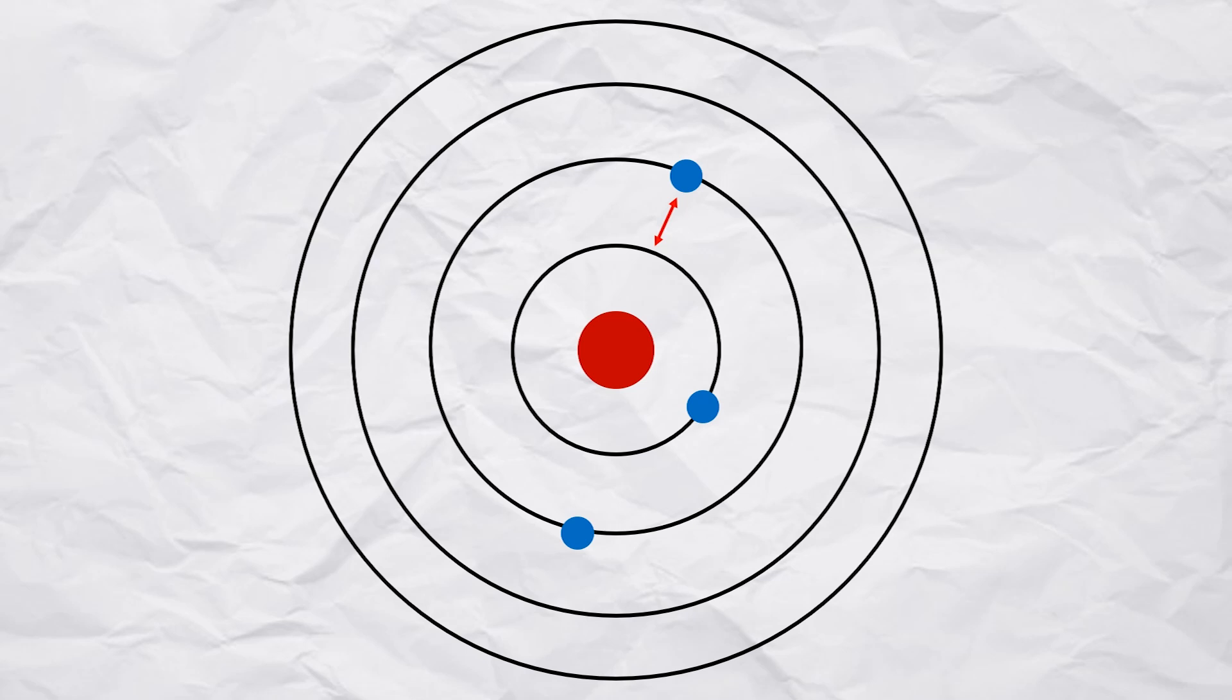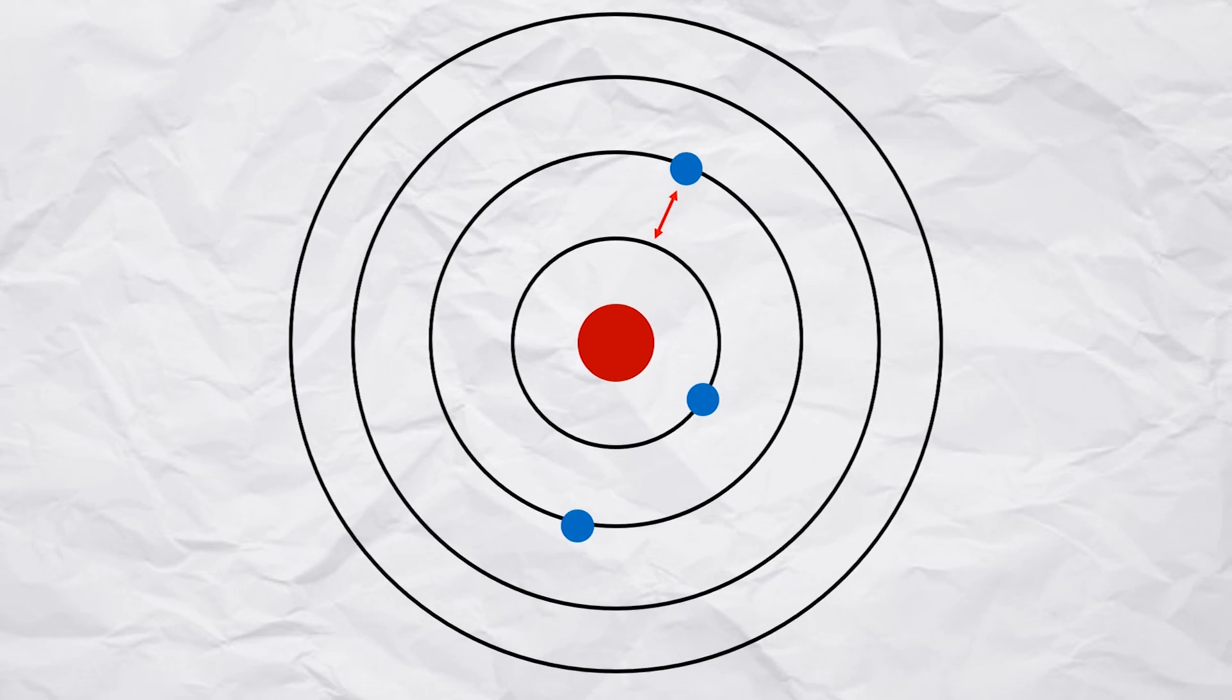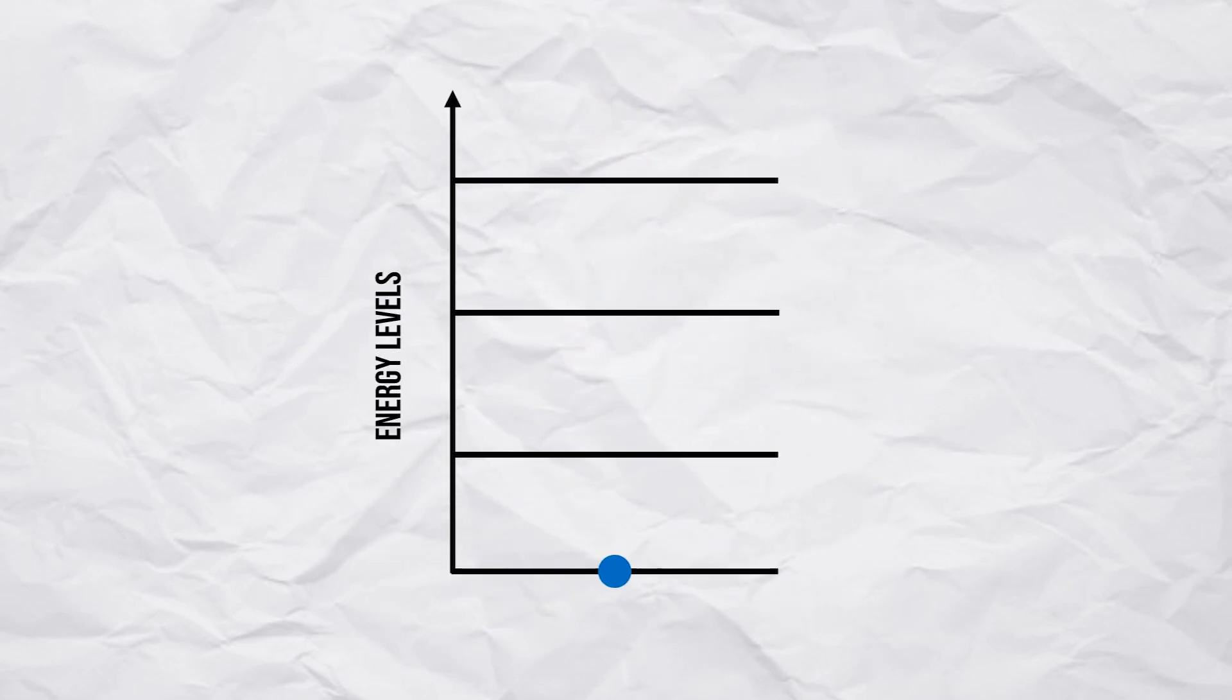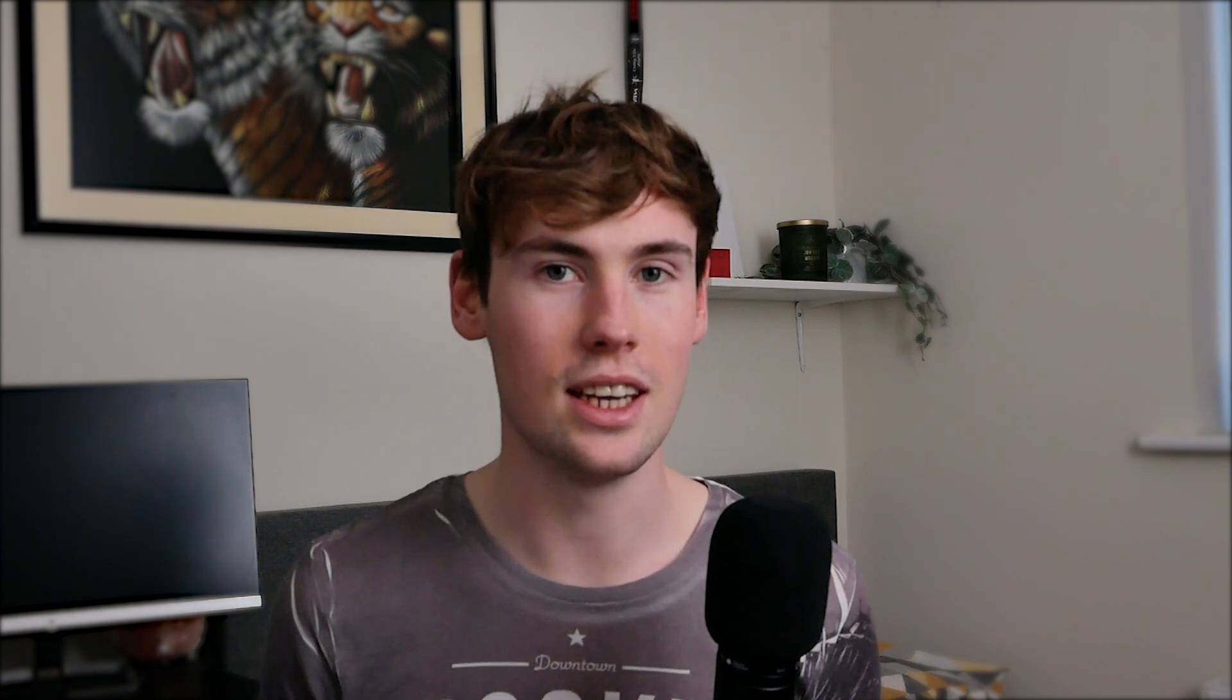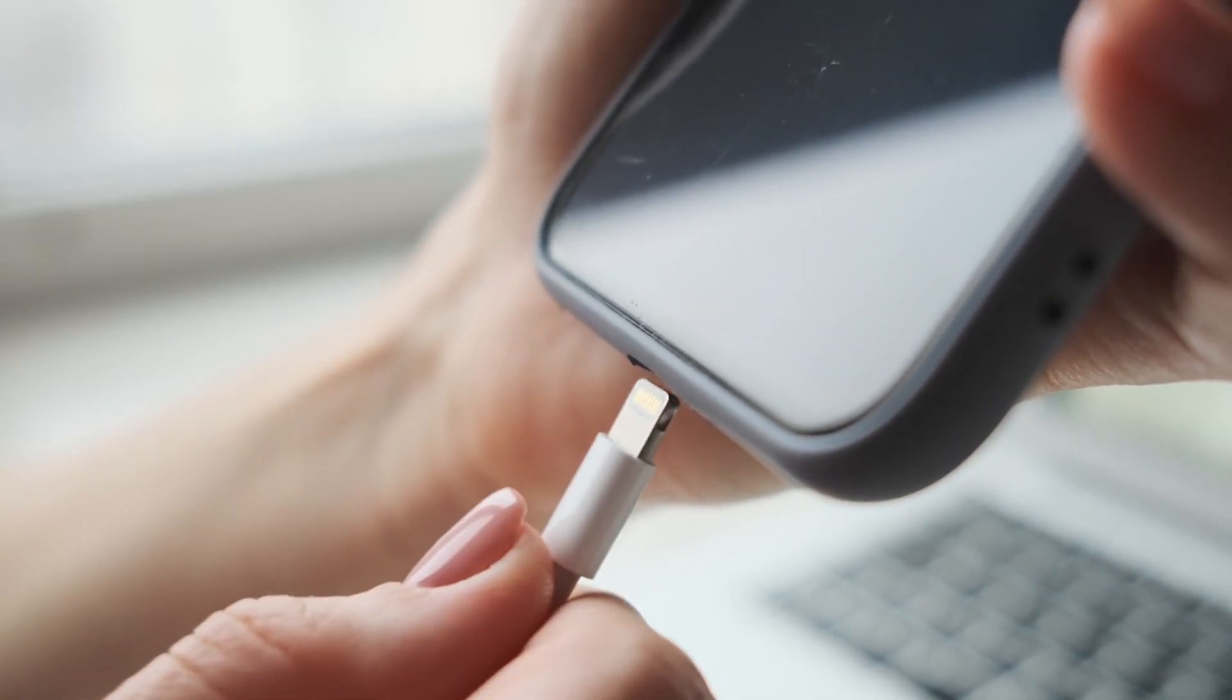As we're only really interested in the energy states of the atom, we'll simplify this diagram even more so it's just a ladder, representing the energy states of the atom. There are a number of ways to get an electron to a higher energy state, which for a quantum battery is equivalent to charging it.